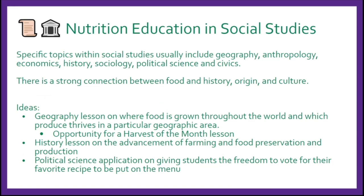There's always a strong connection between food and history, origin, and culture — so let's showcase that. Ideas could include geography lessons on where food is grown throughout the world and which produce thrives in a particular geographic area. When doing capitals and states, you can talk about what your state fruit is. California's state fruit is the avocado — we actually showed it at the beginning of this session — so there are plenty of opportunities for harvest-of-the-month lessons.